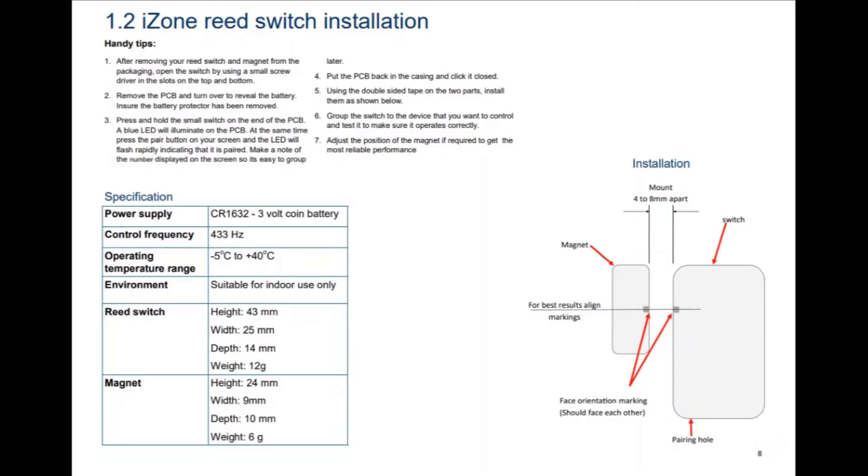You'll need to mount the reed switch and the magnet on the door when it is closed. Find a suitable location and ensure the two are mounted as indicated on the instructions. Once the reed switch and magnet are mounted, check the screen to make sure they show the door position is closed.